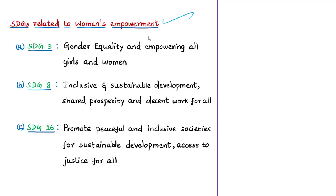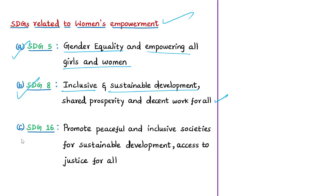The report we are discussing is a review of achievements in gender equality after 25 years of the Beijing Platform for Action and the Beijing Declaration. Many SDGs are related to women's empowerment — SDG 8 focuses on inclusive and sustainable development and decent work for all, SDG 5 is particularly dedicated to gender equality and empowering all girls and women, and SDG 16 aims to promote peaceful and inclusive societies, provide access to justice, and build effective and accountable institutions.